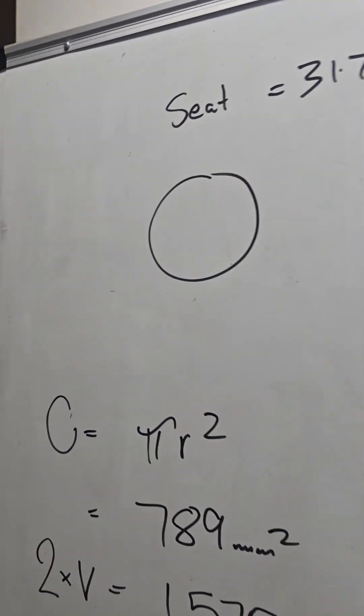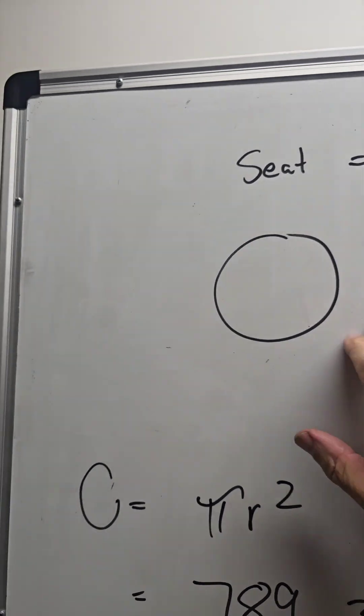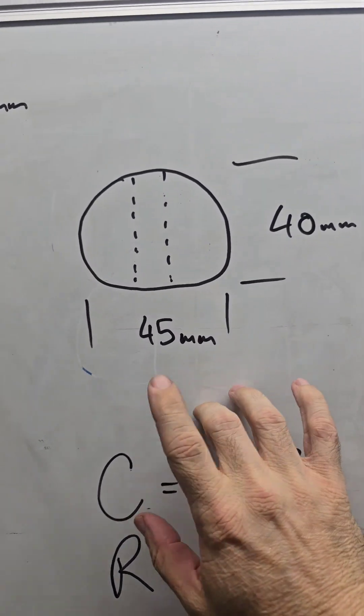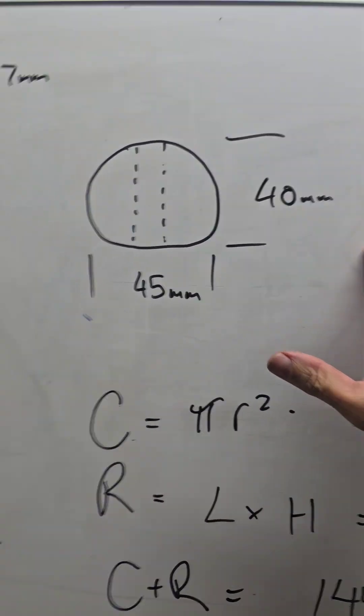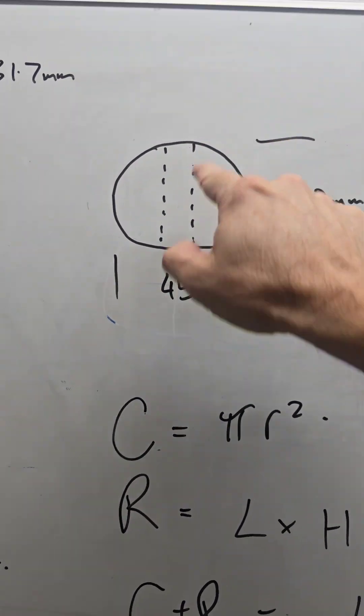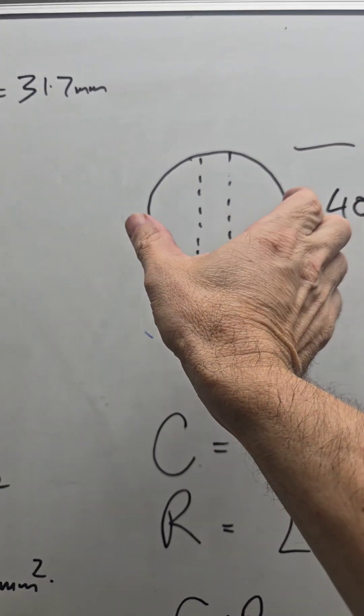Alright, so now we've got some figures. The seat, 31.7 roughly. The window is going to be about 45mm by 40mm. This is basically just a circle that's been split apart with a rectangle in the middle.